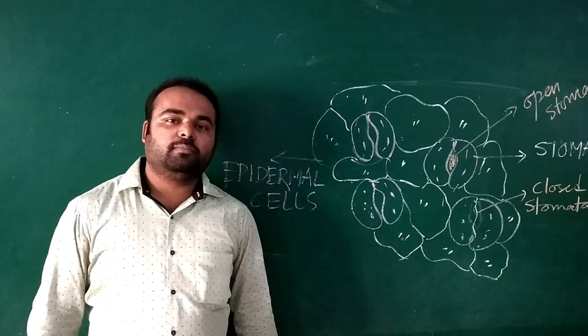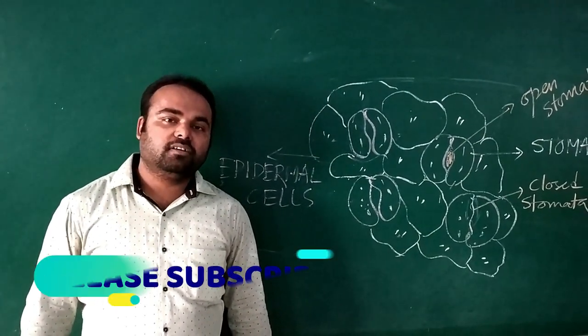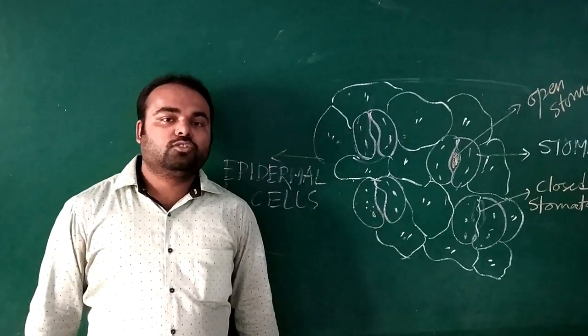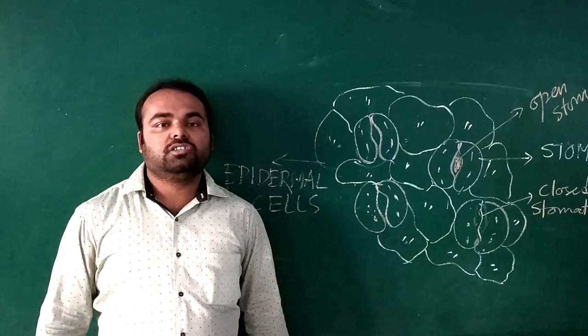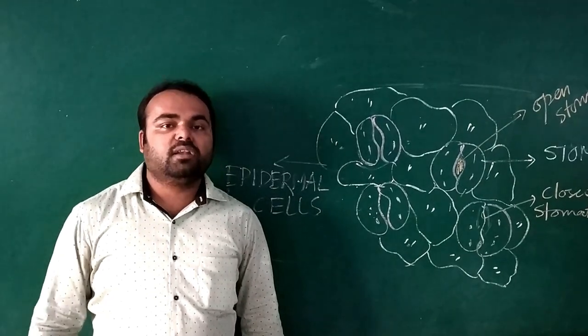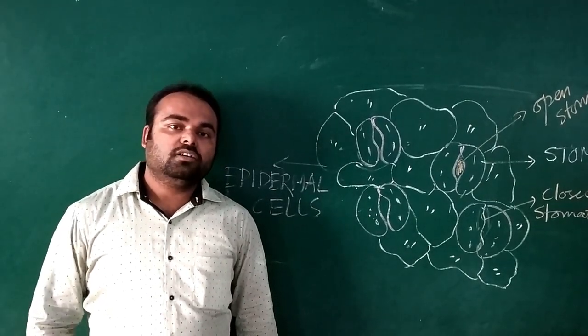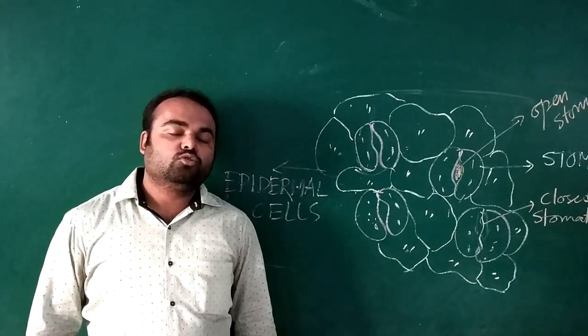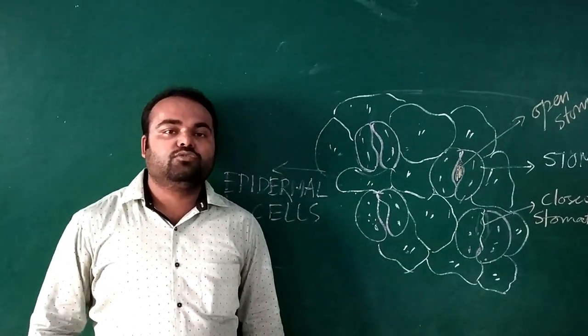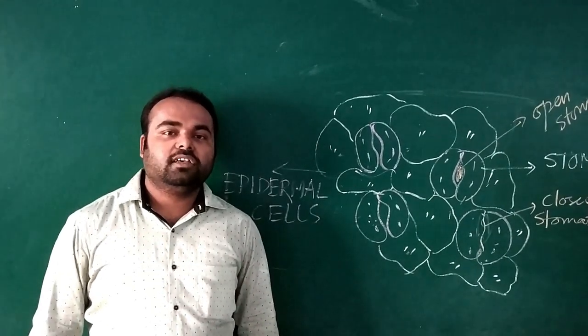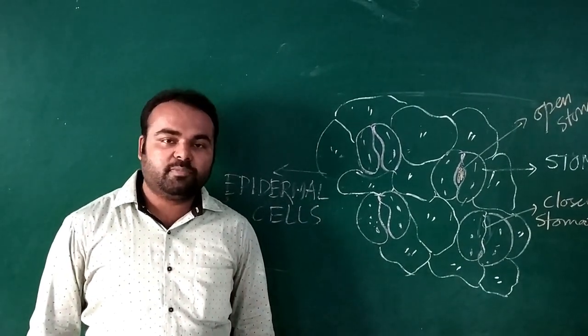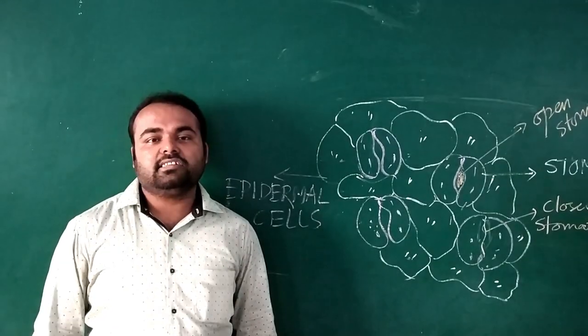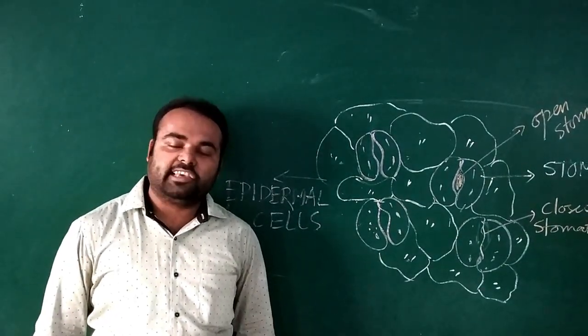So this is all about the process by which you can prepare a slide of stomata. Through this video, I am trying to show there are two alternative methods by which you can extract the epidermal peel: one method to tear the leaf against the venation, and another method to get the epidermal peel by using forceps. If you like this video, please subscribe to my channel News Biology. Biology is everything. Please hit the bell icon to get regular updates. Thank you very much.